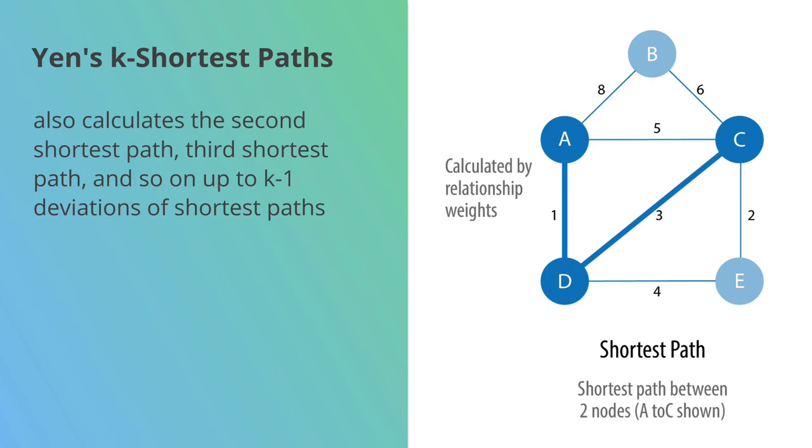This one's really useful if the shortest path you're shown is actually busy and you want to know some other routes. Google Maps does this - it shows the shortest path, but there are a couple of other ones as well.